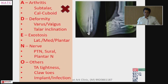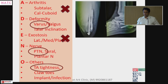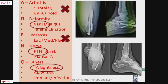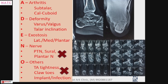Looking at this case — there is no arthritis, there is a deformity of varus, there are no exostoses, there is nerve involvement because the screws are brushing the posterior tibial nerve, and there is calf tightness as the Achilles has shortened. You need to address and correct all these points, and then bring the heel down.